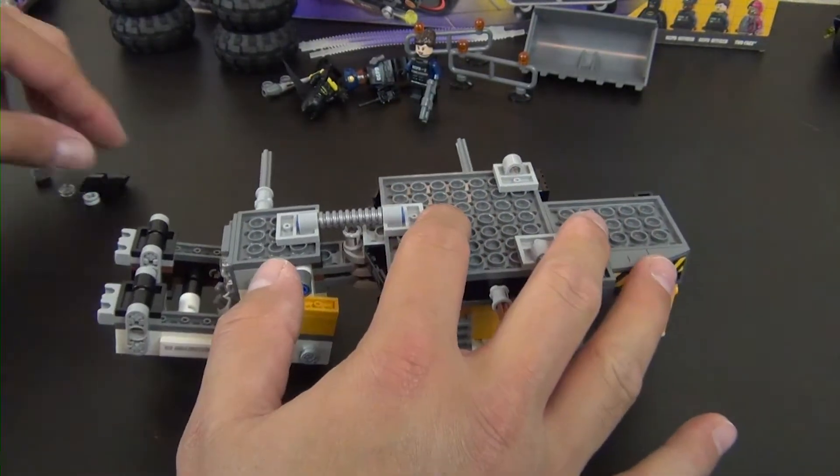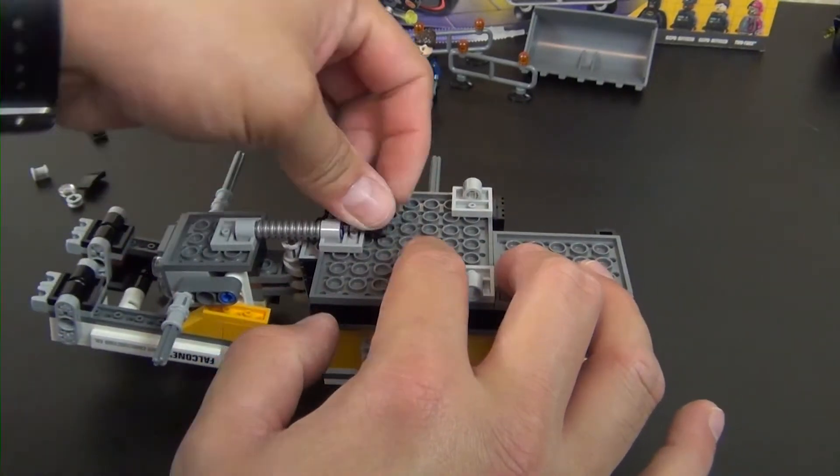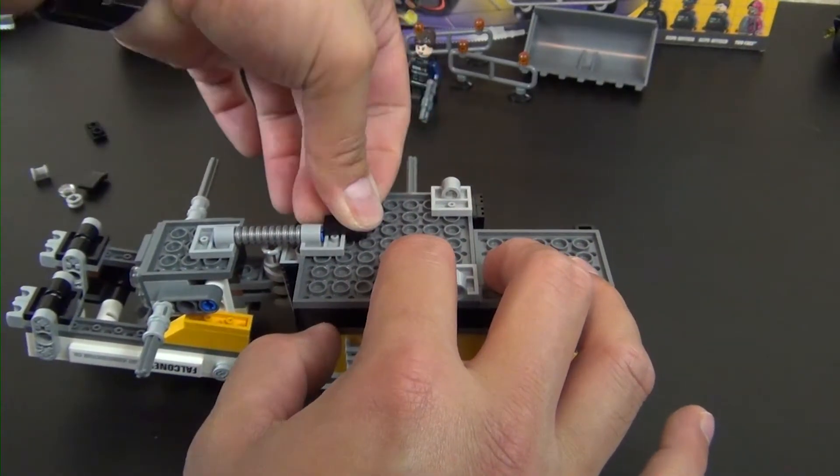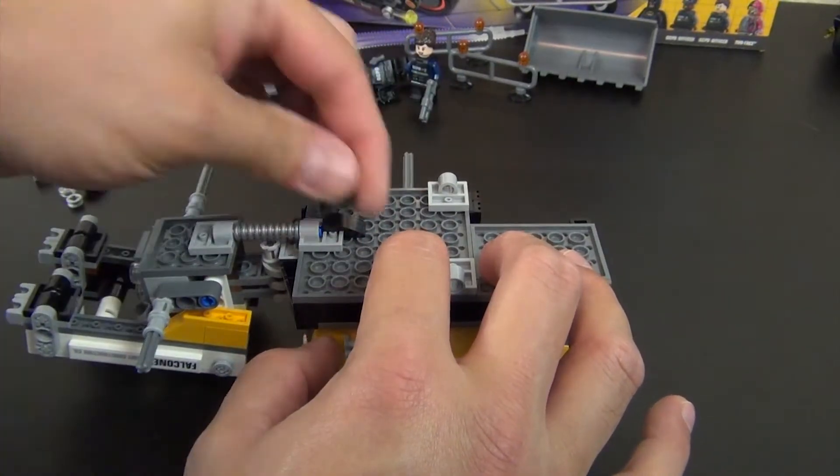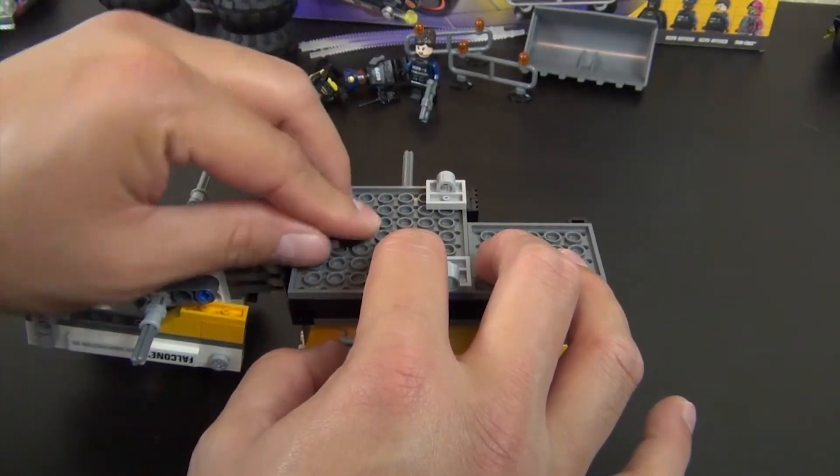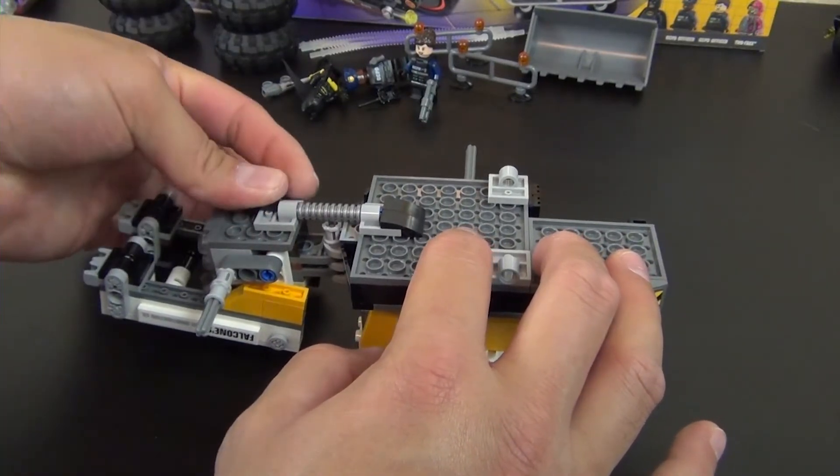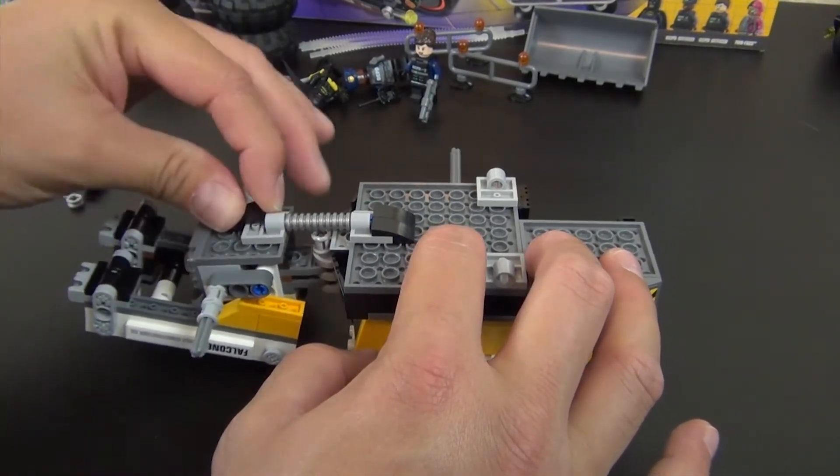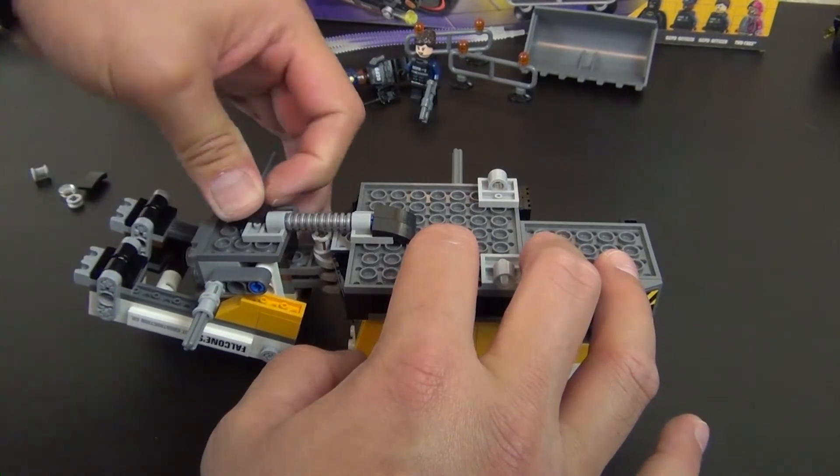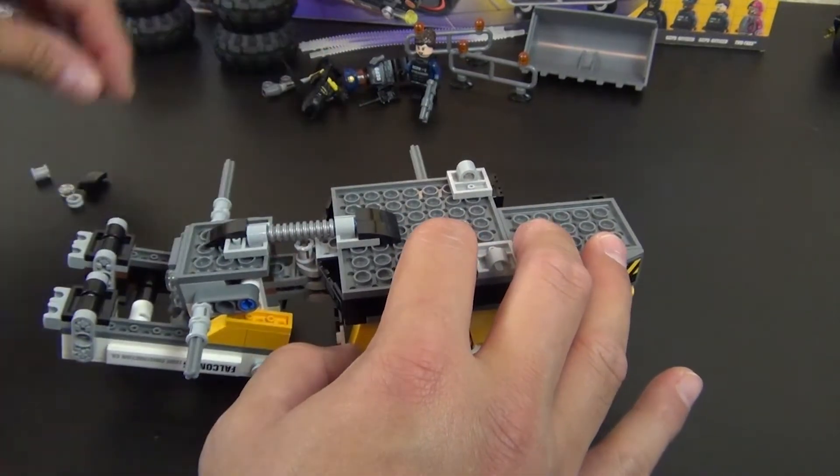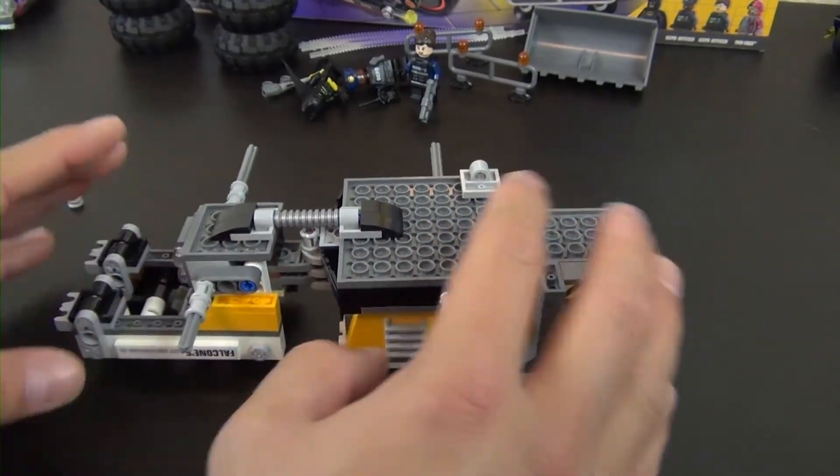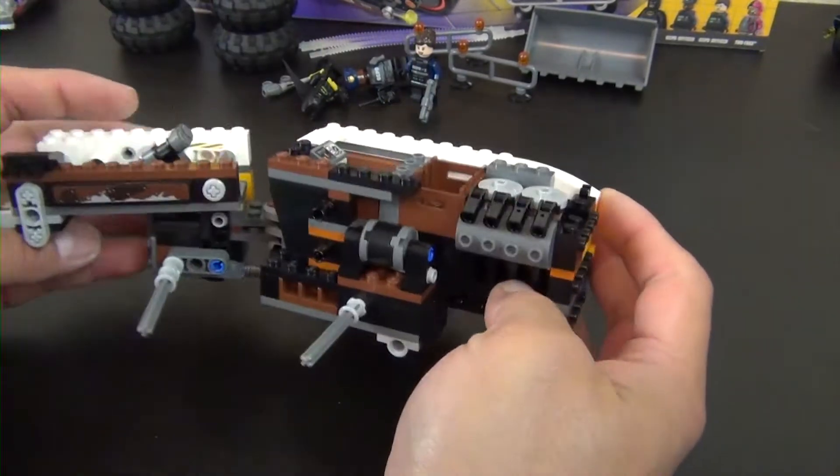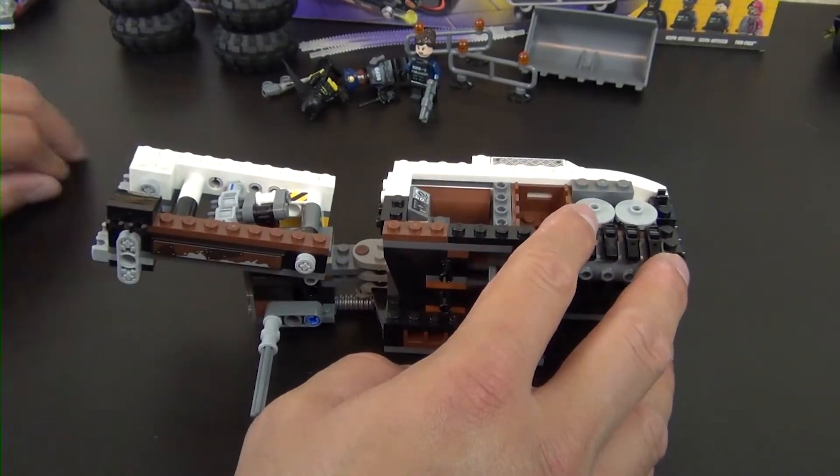All right, so we have these inverted bow shapes. One, two, three, and four if I can get it on there - there we go. These seem to be a little tricky. All right, so we're getting close.